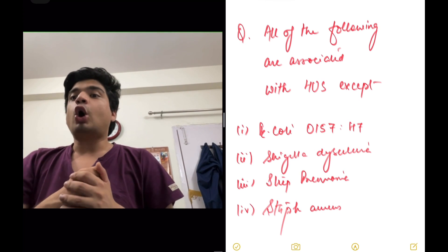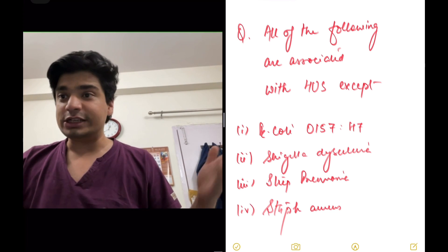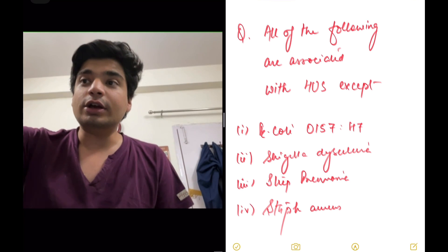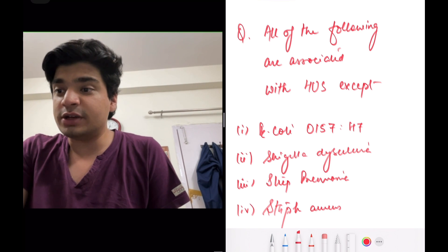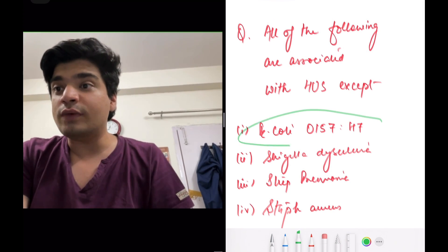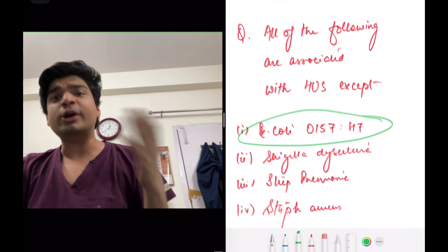For example, all of the following are associated with HUS except - the options given were E. coli O157H7, Shigella dysentery, Strep pneumoniae and Staph aureus. Now, some of you who might not know the exact answer to this question might think that okay, I can at least eliminate one option that is E. coli O157H7 because that's pretty much known to everyone. Fair point. That's okay.